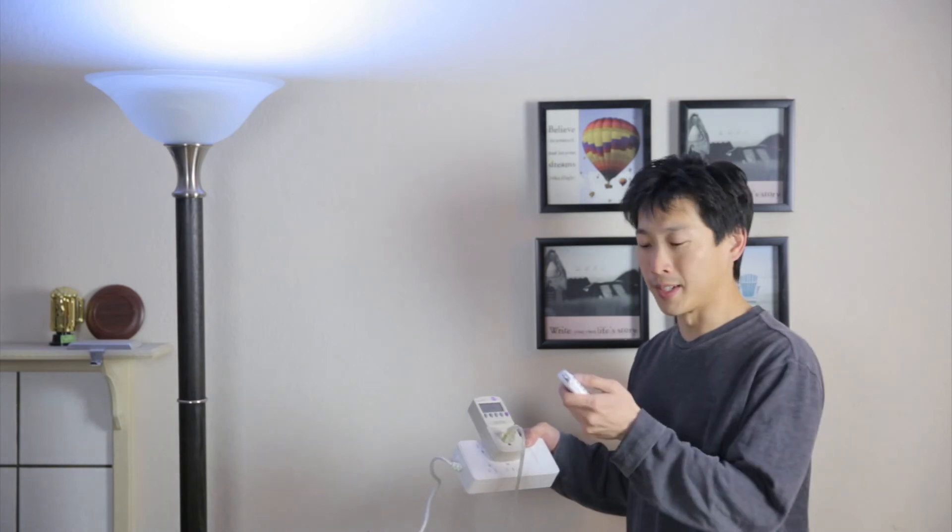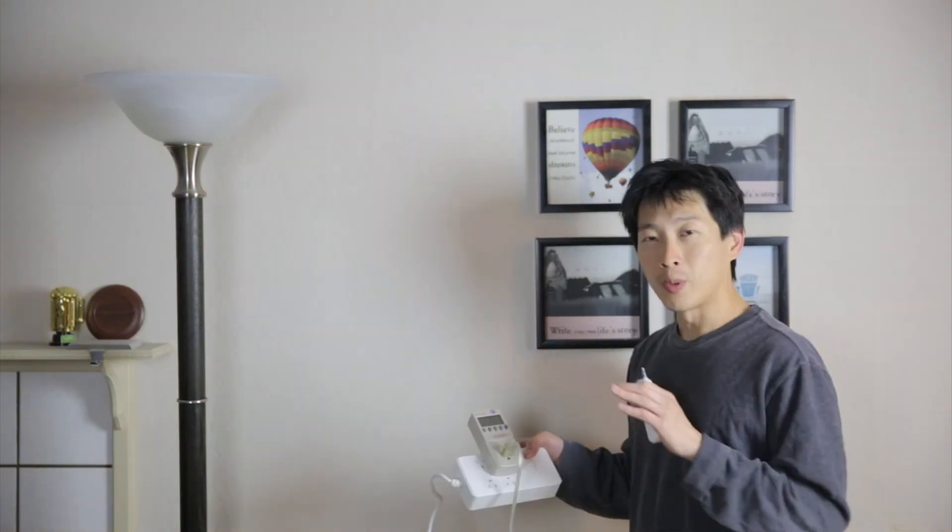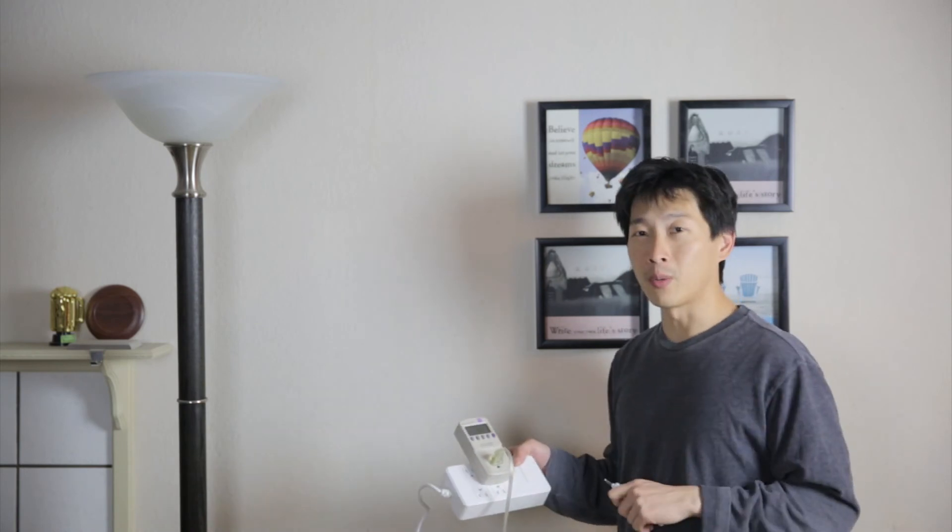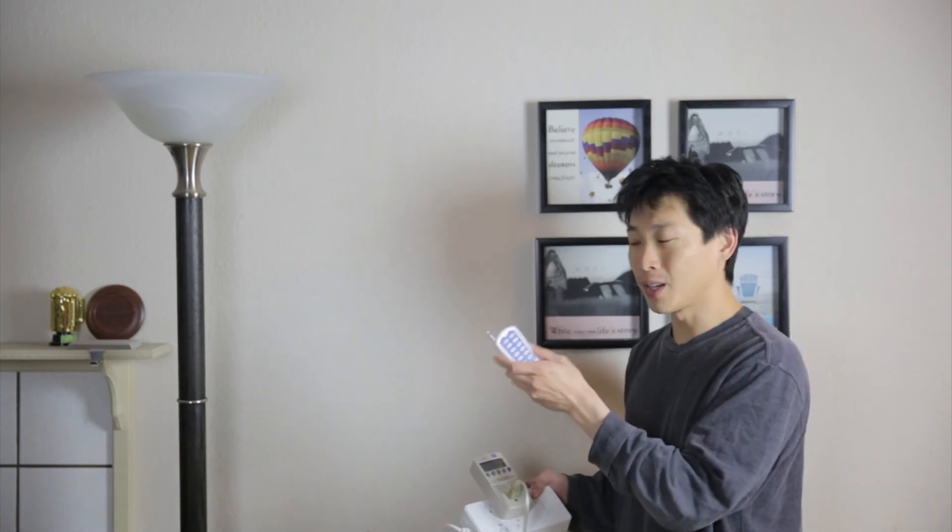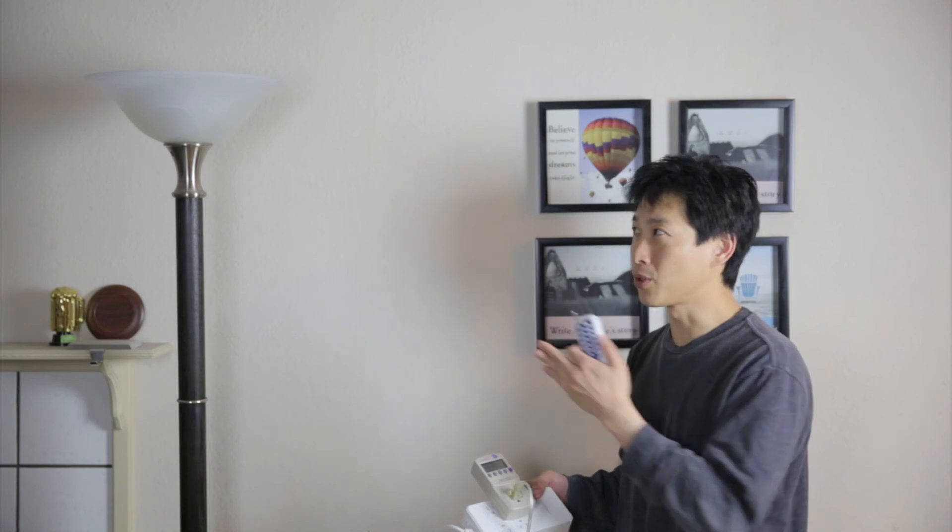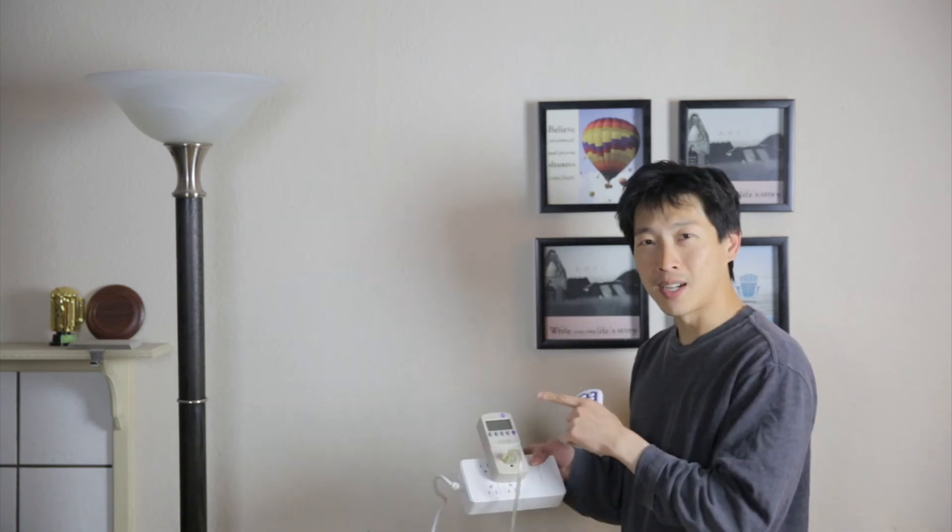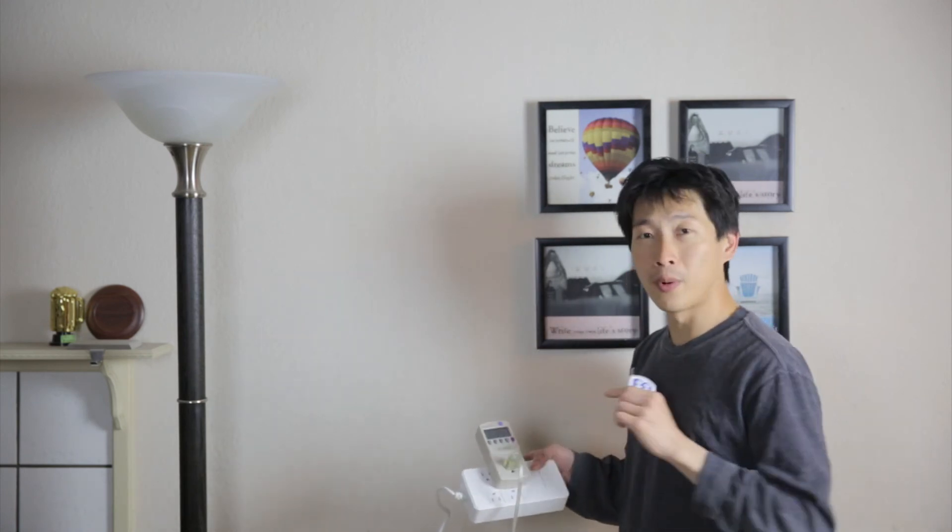One additional thing you might be interested in is if you turn it off, how much standby power it actually consumes. Right here, it shows about 0.7 to 0.8 watts of standby power, even though the light bulb is not putting out any light. There are some circuitry on standby so that it can receive signal from this RF remote so that it can turn itself on. That comes at a cost of about 0.7 to 0.8 watts.